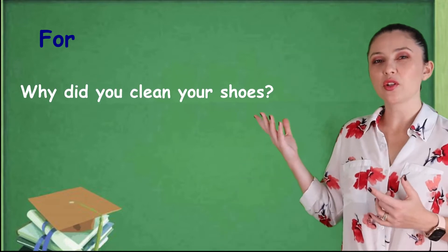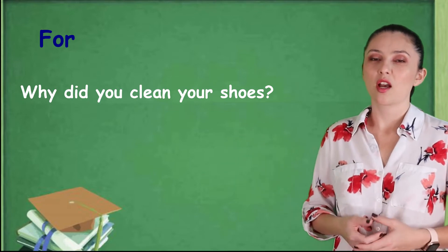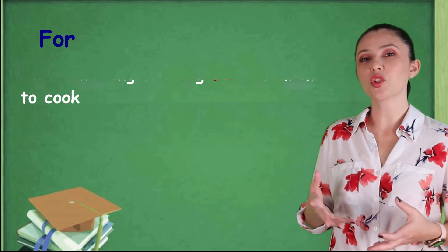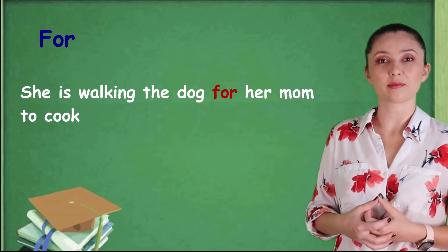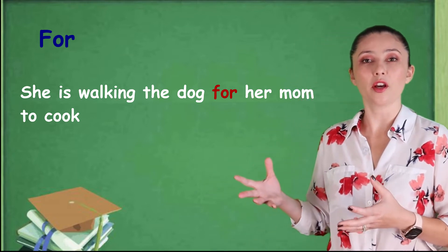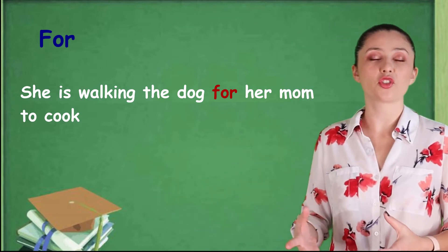And if we're talking about a formal setting, such as writing, you can use for in the place of because. So, every time you want to say because, you can also use for. Why did you clean your shoes? Well, for it to be clean. She's walking the dog for her mom to cook. So, she's walking the dog because her mom wants to cook, needs to cook.